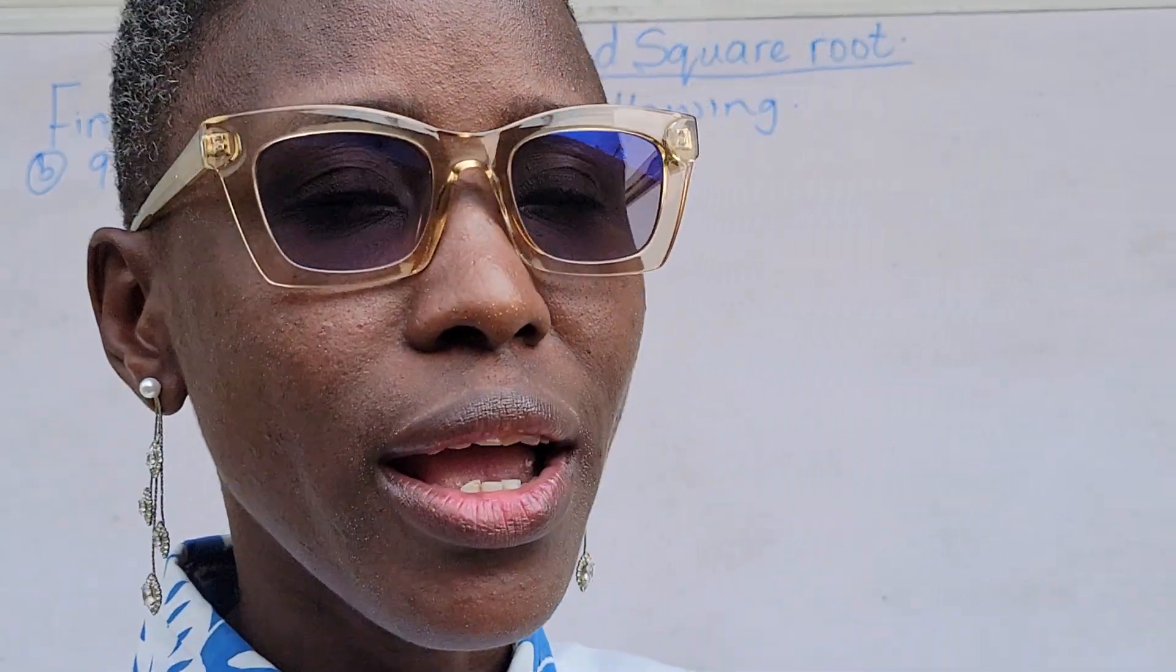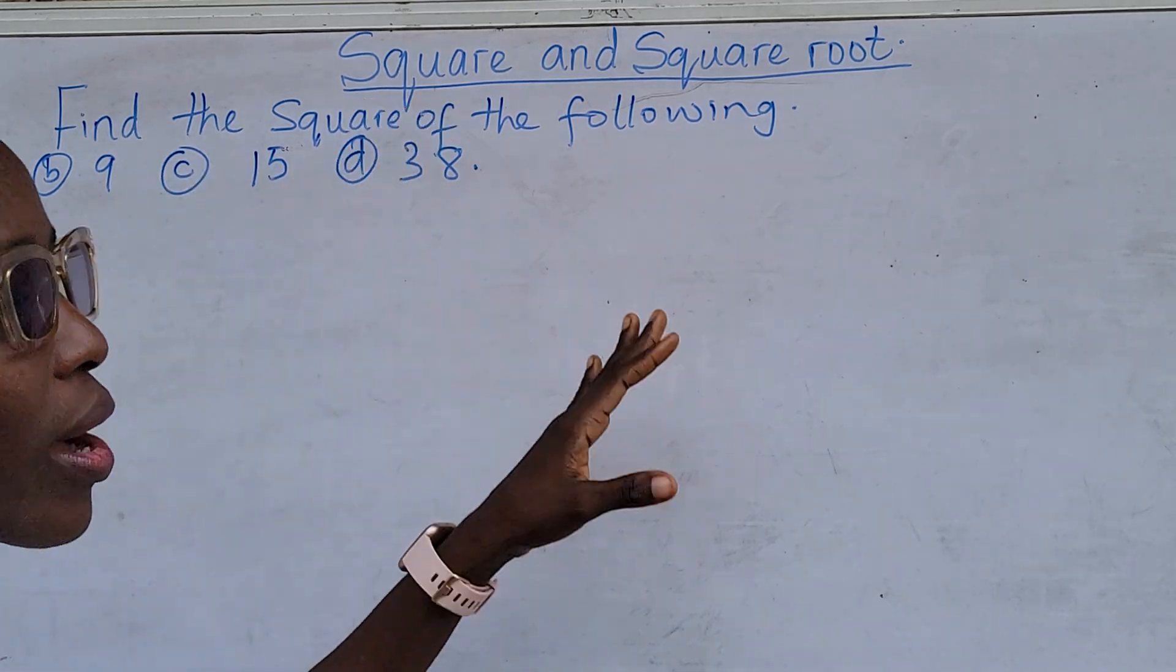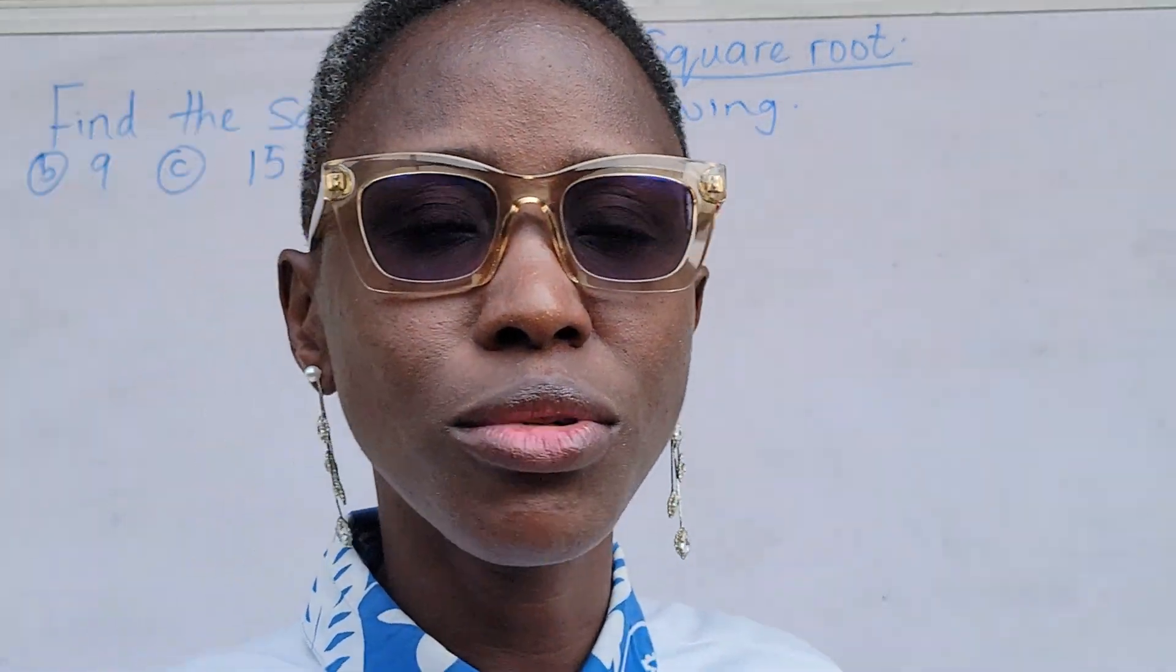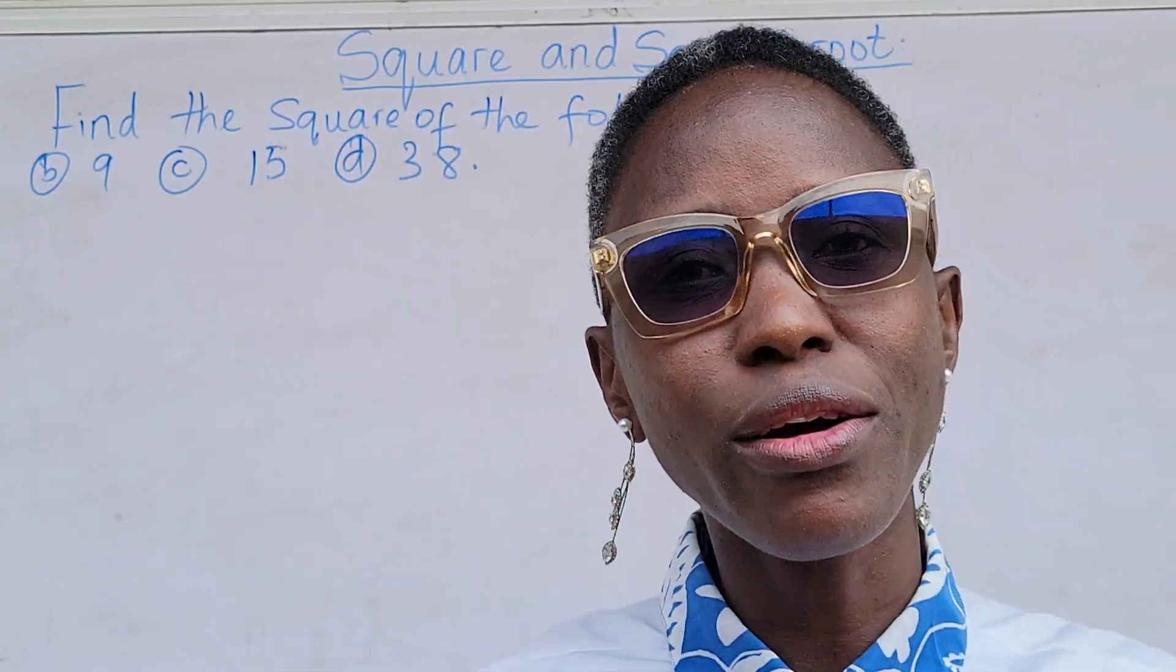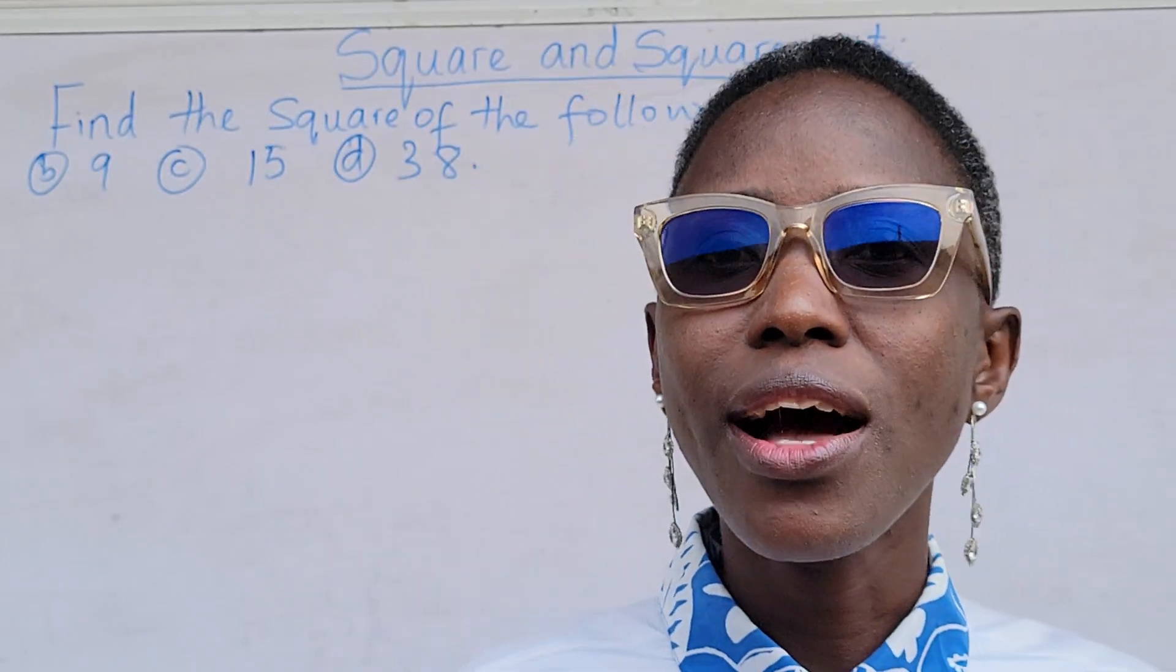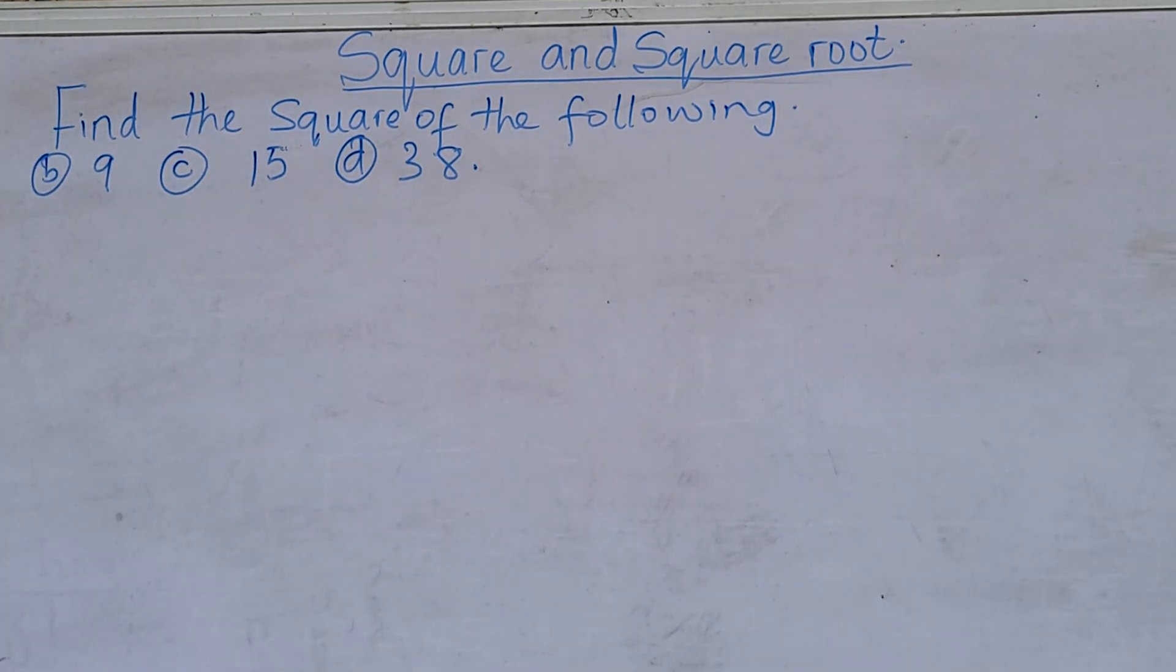I will start with square. In mathematics, if you are asked to find the square of a certain number, what it is telling you is to multiply that number by itself. Now I am going to do some examples as it is written on the board so that I will be able to explain what I mean.